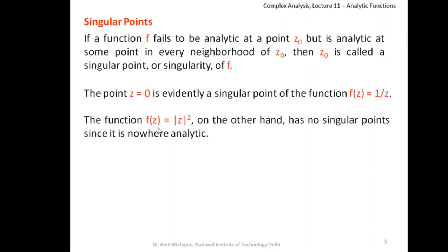On the other hand, f(z) = |z|² has no singular point, because this function is nowhere analytic. It is differentiable only at the origin, and at the origin we cannot find a neighborhood containing at least one analytic point. So it is not analytic, and if it is nowhere analytic then it cannot have any singular point, because the definition says a point is singular only if we can draw a neighborhood in which the function is analytic at some point.